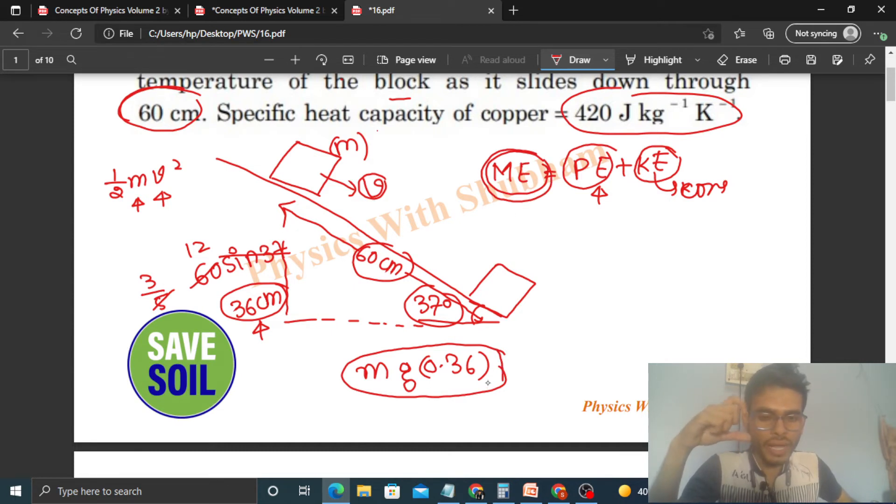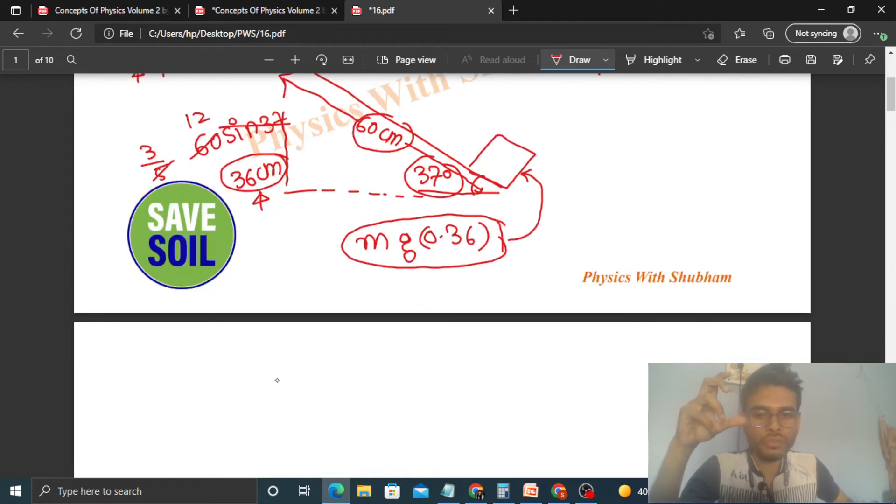So this decrease in mechanical energy is converted to heat energy and this will go to the copper block. So when we supply Q amount of heat to a block, then its temperature increases by delta T.